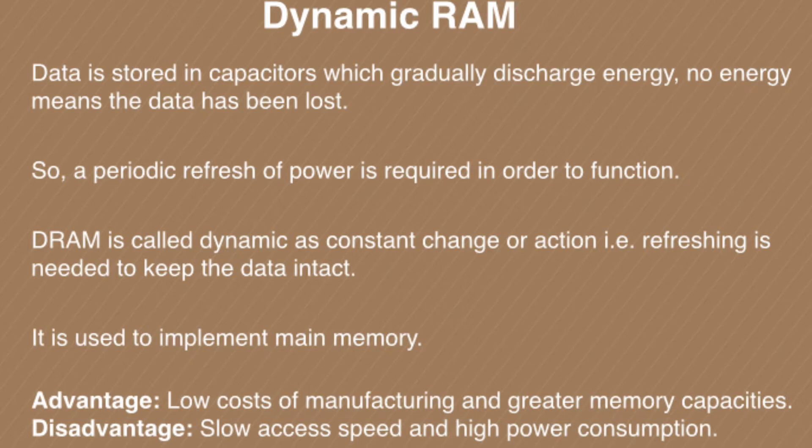Main memory is larger than cache memory. The advantages of DRAM are low cost of manufacturing and greater memory capacity. Its disadvantages are slow access speed and high power consumption.